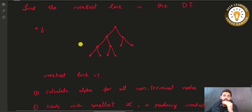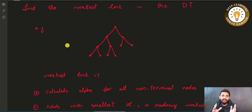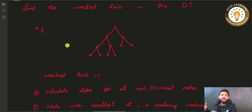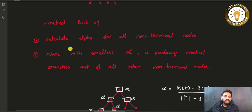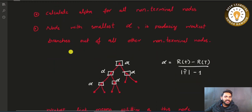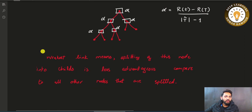By using the alpha value we can find the weakest link in the decision tree and prune its branches accordingly. At the start we consider tree T1, then prune the branches of the node with minimum alpha — the weakest link — to get another tree T2. We keep on pruning on the basis of the weakest link with minimum alpha. The node with the smallest alpha is producing the weakest branch, so we prune that: splitting of this node into children is less important compared to all other non-terminal nodes.